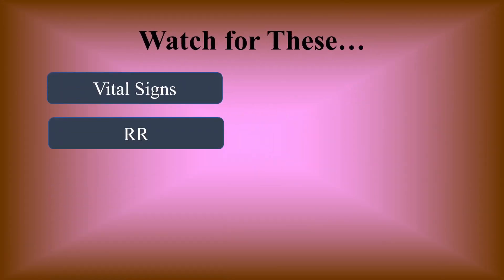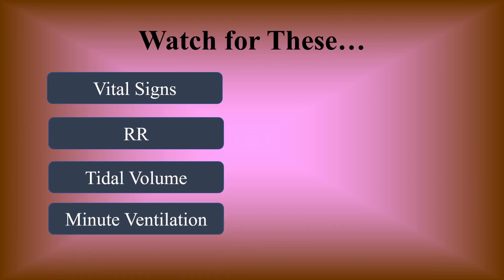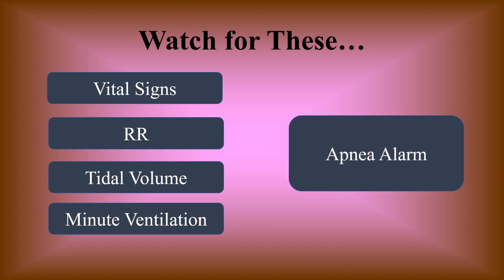During the trial, watch the vital signs, respiratory rate, tidal volume, and minute ventilation on the ventilator. Make sure all of these are in a good range and set your alarms appropriately so that if volumes drop or respiratory rate goes up, you'll be notified. The apnea alarm needs to be set appropriately — 15 to 20 seconds — and follow your hospital's policies for apnea alarms, because you need to know if the patient isn't breathing.